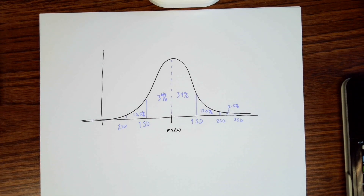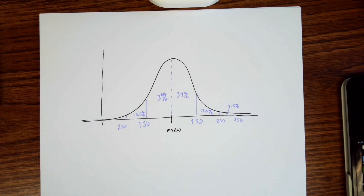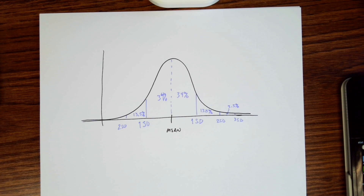Welcome back. We're going to look at standard deviation in a little bit more depth here. What I have is a standard normal curve, and whenever we're looking at a data set we want to take a closer look at the data. Does it have that basic shape of a normal curve? Is it right shifted? Is it left shifted? A normal curve means that we have most of the data in the middle, and then it gets less and less as we move out to the sides.